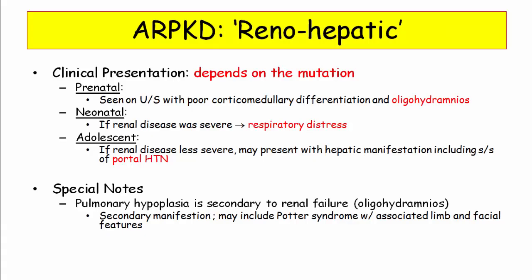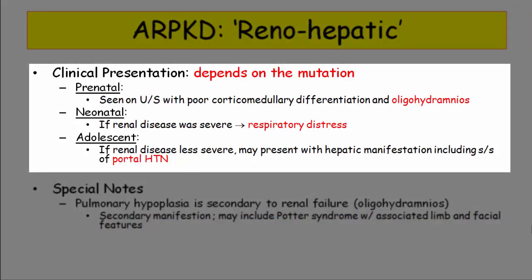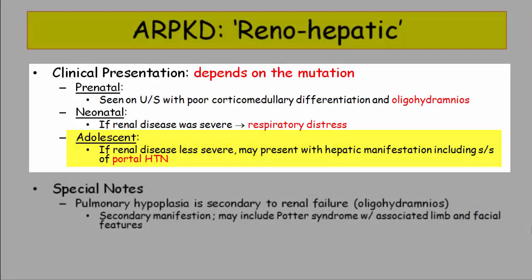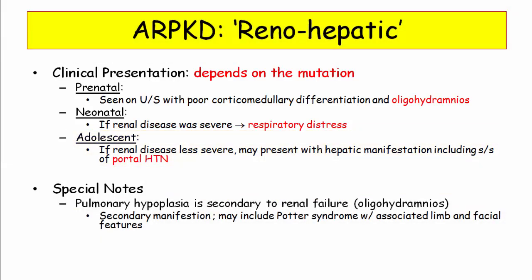Speaking of phenotypic expression, here are the range of disease manifestations. In severe forms, autosomal recessive PKD may be detected on prenatal ultrasound, revealing an abnormal appearance to the kidney as well as oligohydramnios. If sufficiently severe, the neonate may manifest respiratory distress due to pulmonary hypoplasia. If less severe, the liver may be the presenting manifestation. It would be extremely unlikely for the USMLE to present congenital hepatic fibrosis as the presenting manifestation of autosomal recessive PKD, but do be aware.